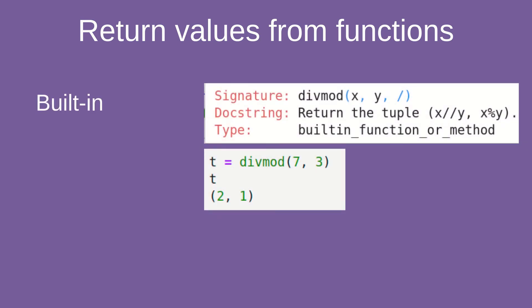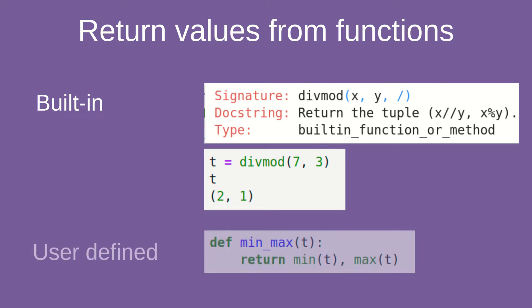Let's say we have the built-in function divmod. We can read its documentation and find that it returns a tuple. Once we use this function we get a result which is a tuple, and in order to access the values from this result we need to use tuple notation. Also we can build our own function and return a tuple — for example, function minmax takes one argument t and returns two values separated by a comma, which is just a tuple.